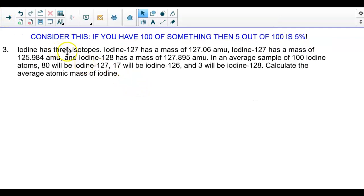On this example, there are three isotopes of iodine, but we need to consider a different kind of way of approaching your problem. If you have 100 of something, then 5 out of 100 is 5%. So I want you to think about what a percent means. As we read this problem, there are three isotopes of iodine. And remember, the part that makes these a little tricky is that you've got to read and see what's grouped with what.